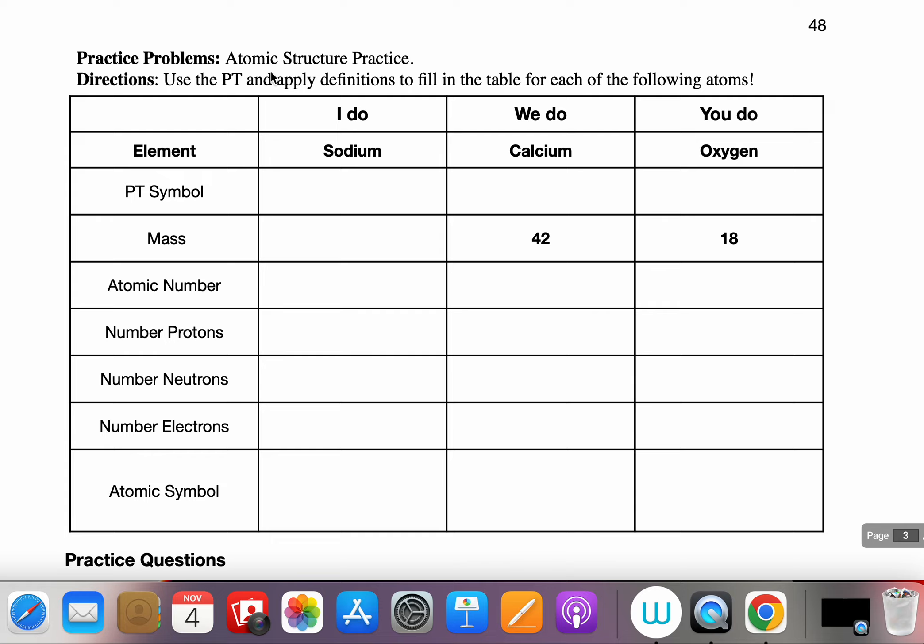So the first thing, the I do, the element named is sodium and I need to know the periodic symbol. If I don't know it I don't guess, I turn to table S and I find the name sodium and I look just to the side of it and it provides the PT symbol which is Na.